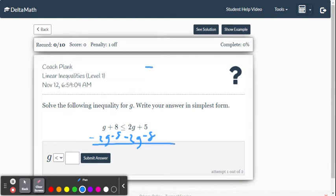And so then we get this: we have negative g is less than or equal to negative 3.